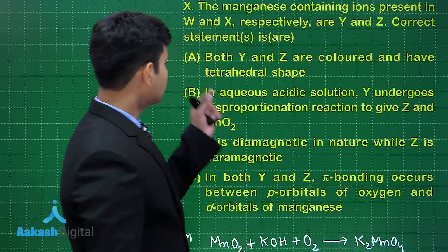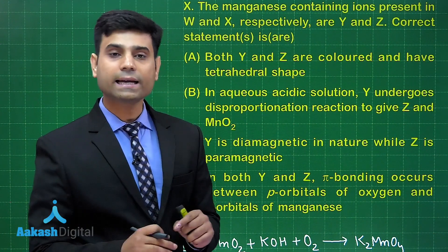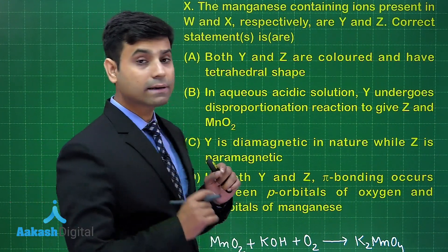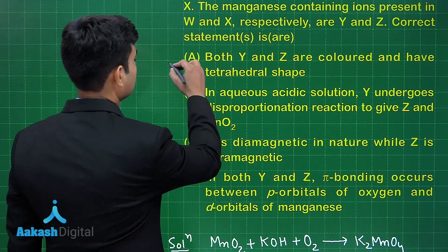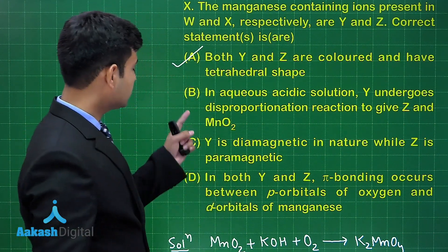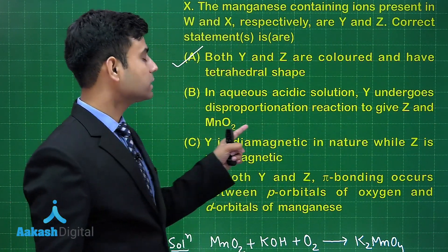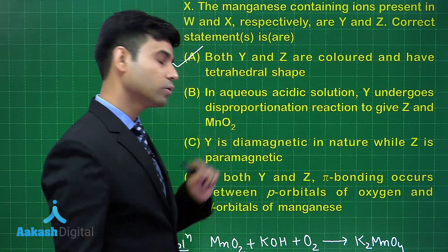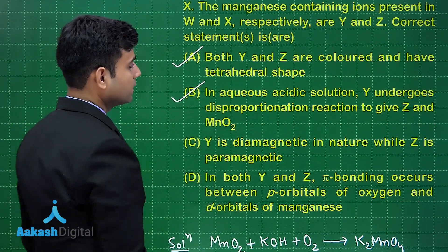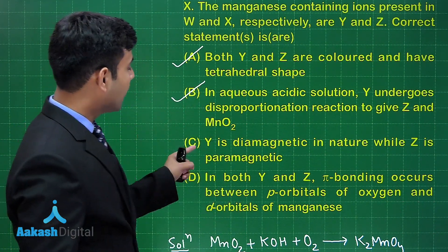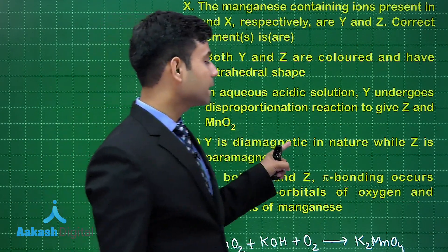Option A says both Y and Z are colored and have tetrahedral shape — this is correct. Permanganate as well as manganate both are colored and have tetrahedral shape. Option B says in aqueous acidic solution Y undergoes disproportionation reaction to give Z and MnO2 — this is also a correct statement. Option C says Y, which is MnO4²⁻, is diamagnetic in nature.